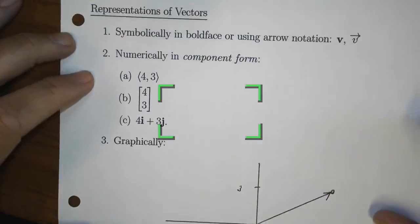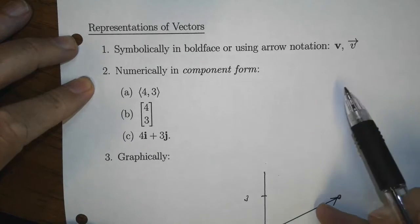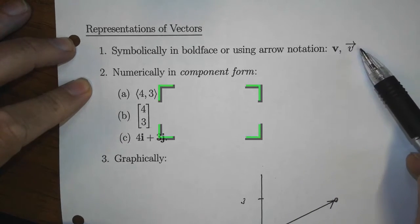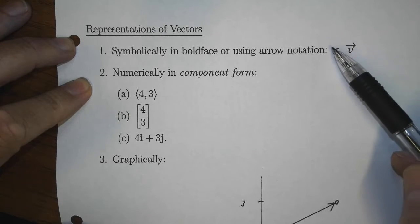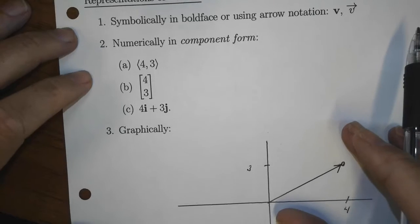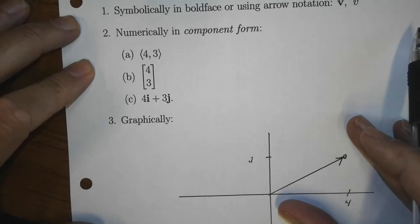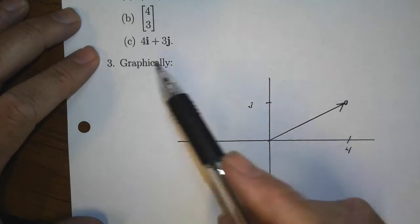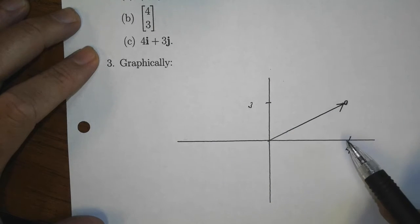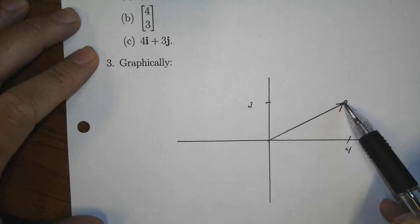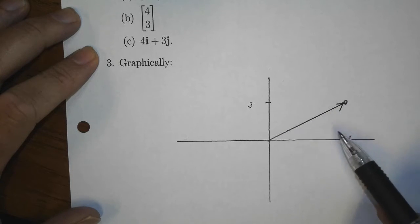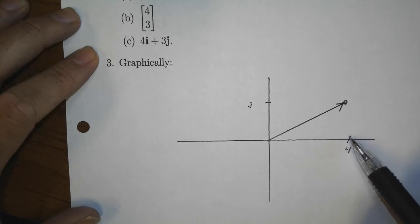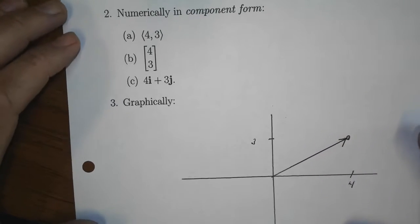Vectors can be represented in different ways. Symbolically, we usually denote a vector using either arrow notation — putting an arrow above V — or a boldface font. Numerically, we can indicate a vector in component form. For example, a vector pointing from the origin to the point (4, 3) has a direction indicated by the arrow and a magnitude or length. It points four units in the horizontal and three units in the vertical direction.